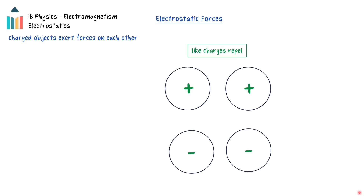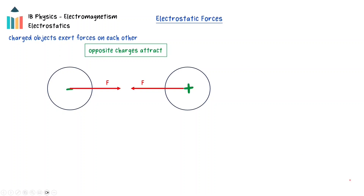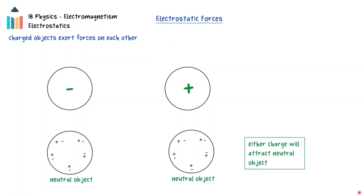Charges can exert electrostatic forces on other charges, with like charges — charges with the same sign — repelling each other, and opposite charges attracting each other. A neutral object can experience an attractive electrostatic force to either a positive or a negatively charged object. This is caused by a charge separation: the positive and negative charges in a neutral object are separated because of the electrostatic forces causing the electrons to move. The protons cannot move due to their location in the nucleus. This charge separation causes the neutral object to behave as if it is charged. There is always a net attractive force because the repulsive force acts over a larger distance than the attractive force.